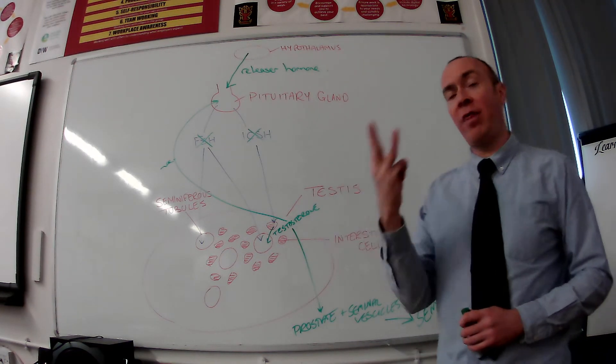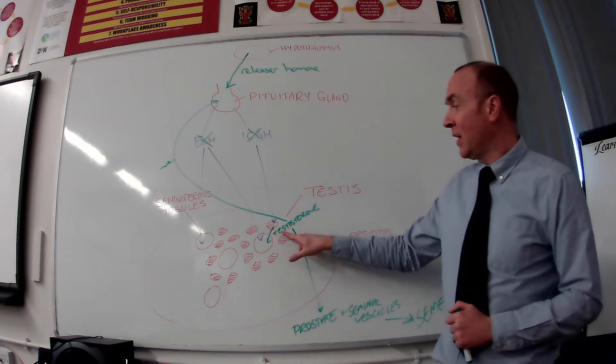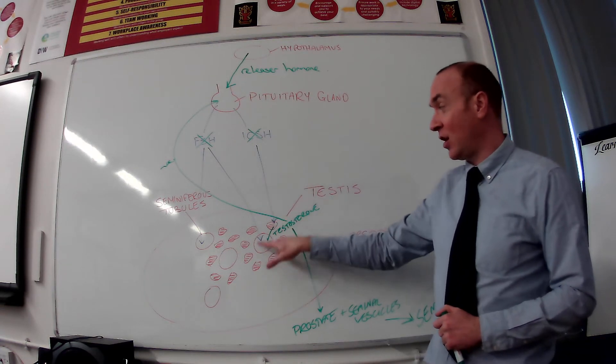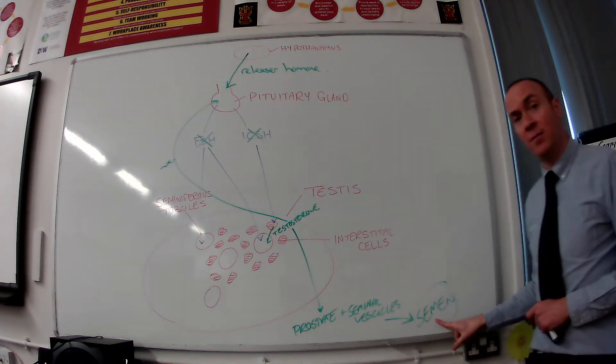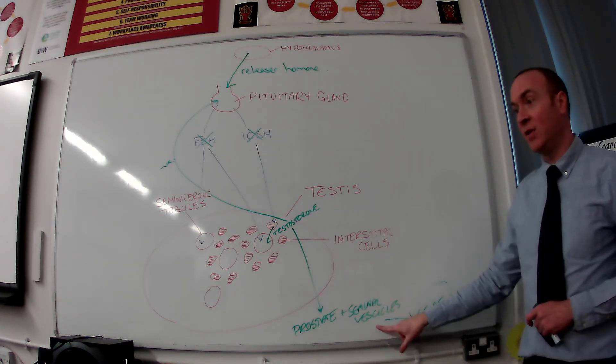Testosterone has got three roles. The first one, it does the same thing as FSH, triggers sperm production in the seminiferous tubules. The second thing is it triggers semen production in the prostate and the seminal vesicles.